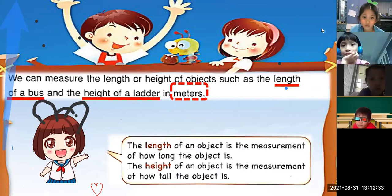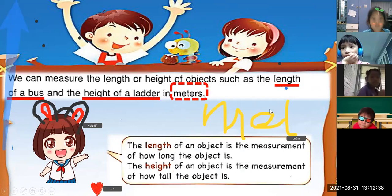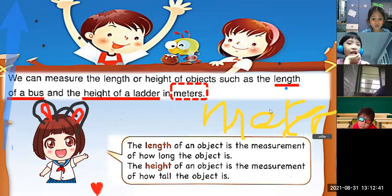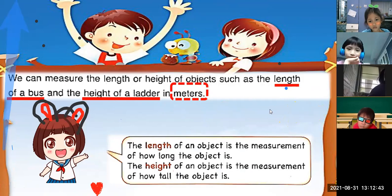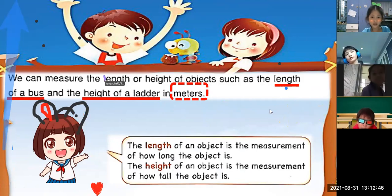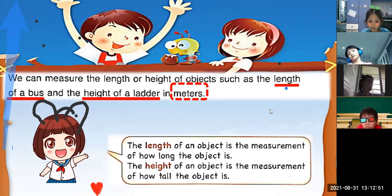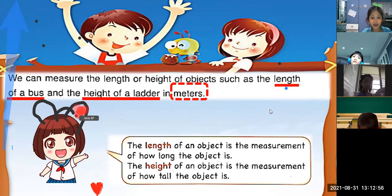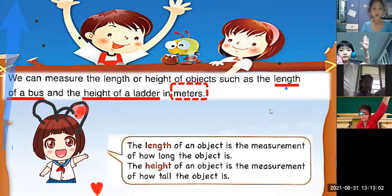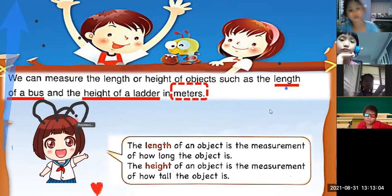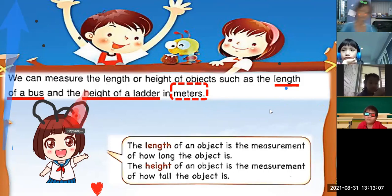What is 'length' in Thai? Length is 'quam yao.' What about 'height' in Thai? Height is 'quam soon.' So length is 'quam yao' and height is 'quam soon.'